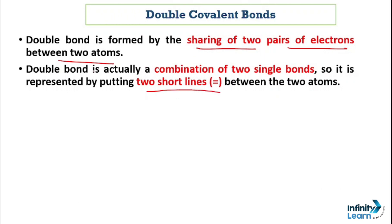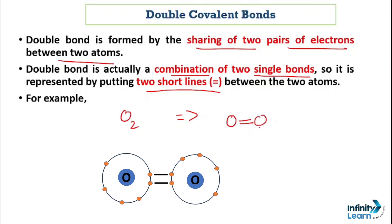What is a double bond? It is a combination of two single bonds. Meaning two single bonds will be shown and it is called a double bond. If we take the example of oxygen, if we denote oxygen according to double bond, then O, then between them 2 short lines, then O. This is denoted as double covalent bond.